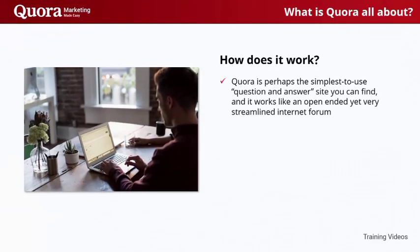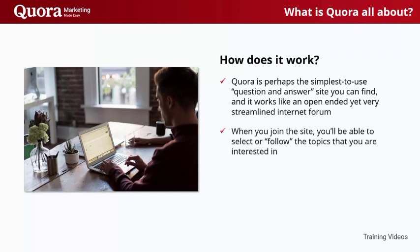How does it work? Quora is perhaps the simplest-to-use question-and-answer site you can find, and it works like an open-ended yet very streamlined internet forum. Anyone can join the site, and it just takes a few clicks to ask questions or give answers. When you join the site, you'll be able to select or follow the topics that you're interested in. Generally, people follow topics that they know about, so they can help others with answers, as well as topics they're curious about, so they can ask questions and get custom answers.